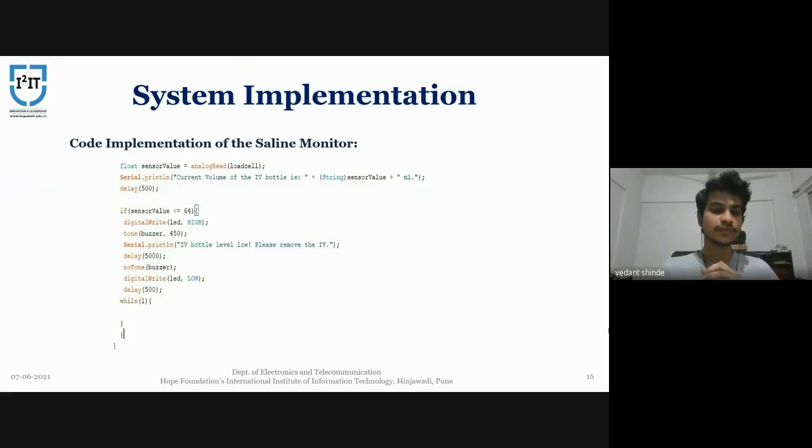This is the code implementation of the saline monitor. The variable sensor value stores the current value that is read by the load cell. It then displays that value. After that, we give a half a second of delay. After which we check if that value is less than or equal to 64 ml.